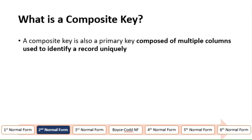The composite key is also a primary key, but it is composed of multiple columns to identify a record uniquely.